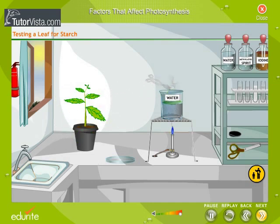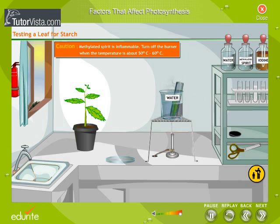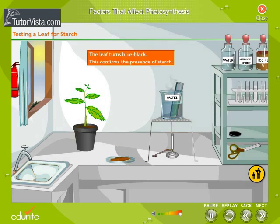Pluck a green leaf from a plant growing in sunlight. Boil it in water for a minute to kill all the cells. Now put it in a test tube containing spirit, and keep the test tube in a hot water bath for a few minutes until it becomes pale white due to the chlorophyll in the leaf getting dissolved in the spirit. Place the leaf in a petri dish and add a few drops of iodine. The leaf turns blue-black, showing the presence of starch.